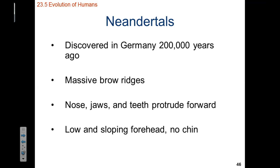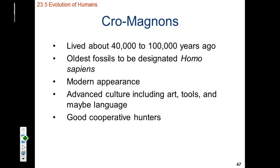Let's talk about Neanderthals. Neanderthals were discovered in Germany and were believed to be present there 200,000 years ago. This prehuman species is characterized by very well-developed brow lines, and the nose, jaw, and teeth — the lower mandible — protrude forward. There is also a sloping forehead and no chin present.